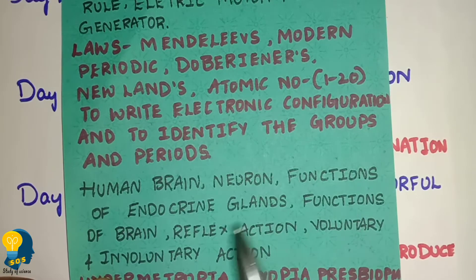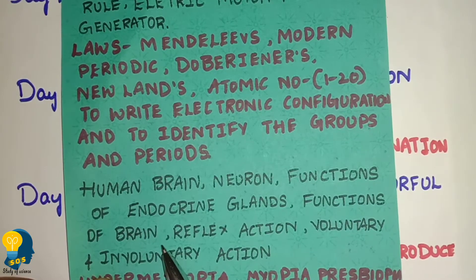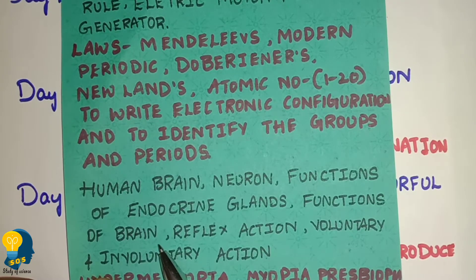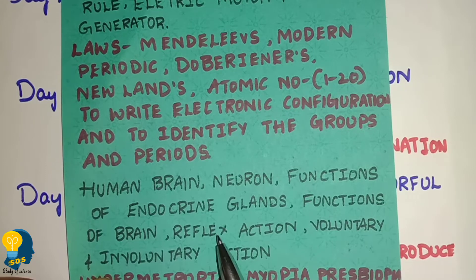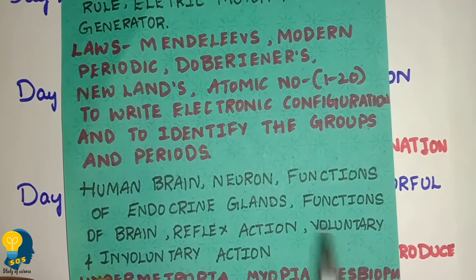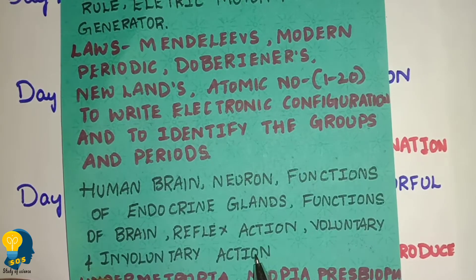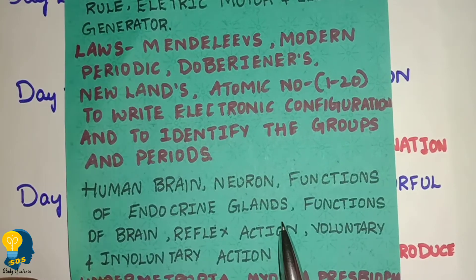Also study functions of brain parts: cerebrum function, cerebellum function, and medulla oblongata functions. Study reflex actions, voluntary and involuntary actions. This is what you focus on in Control and Coordination lesson for day three.